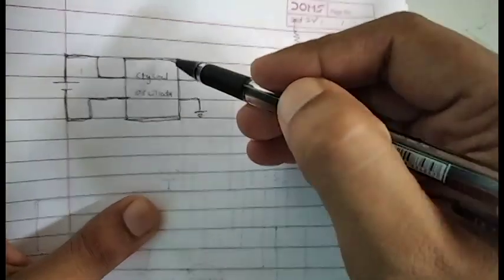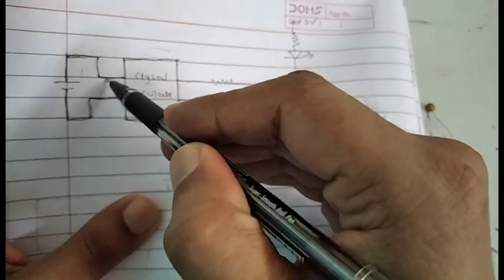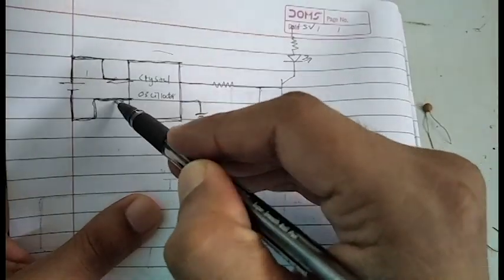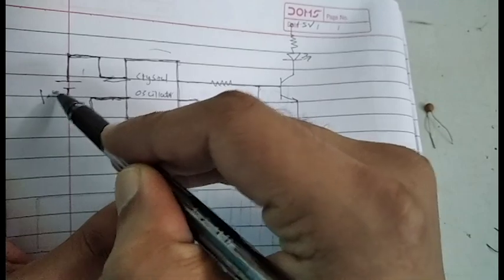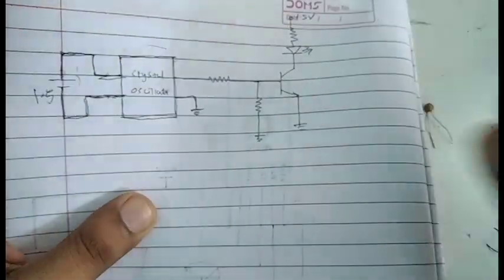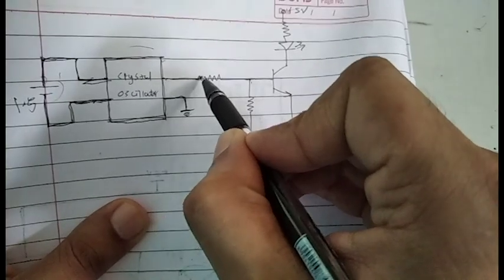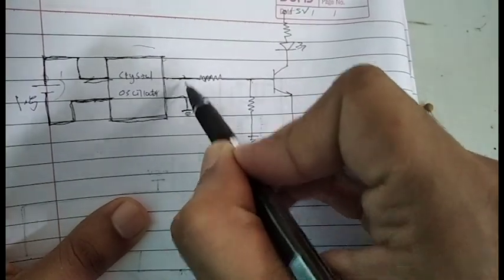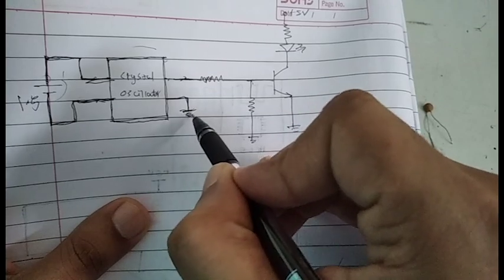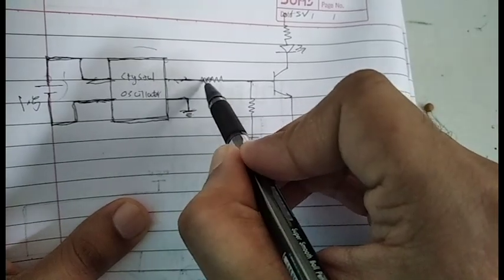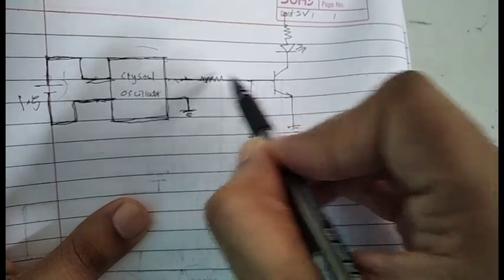This crystal oscillator circuit has four wires. The two power lines are connected to 1.5 volts—this is the 1.5-volt battery. The output lines: this line carries the signal, this is the common ground, so you have to ground this wire, and the output line is fed to the base of this transistor.